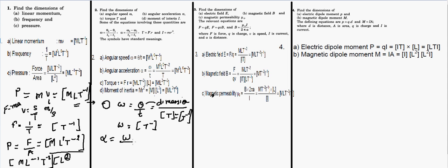For angular acceleration, similar to linear acceleration, the formula is angular velocity divided by time. Since angular velocity has dimension T⁻¹ and we divide by T, the overall dimension of angular acceleration is T⁻².